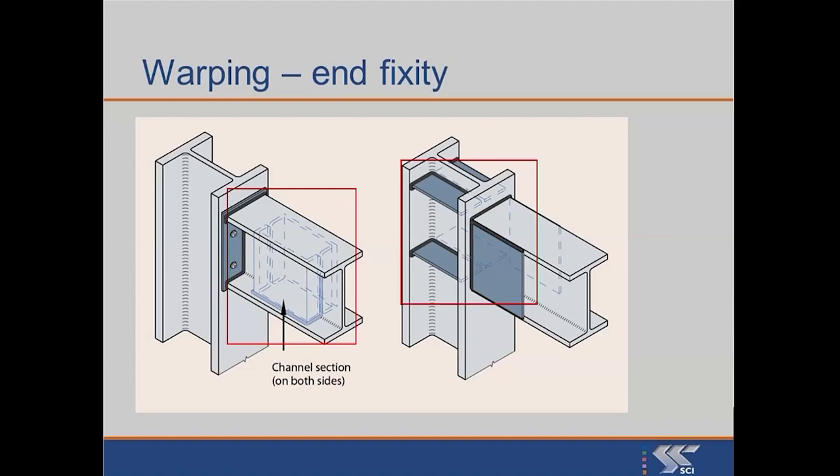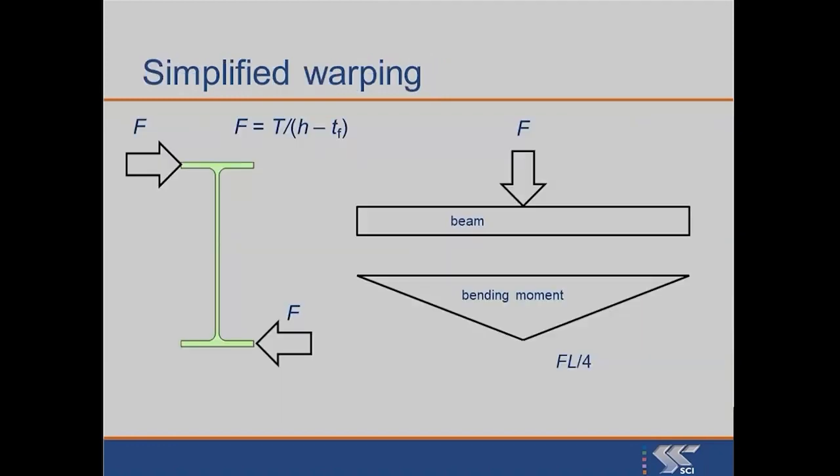These sorts of details, with on the left hand side the additional channel members welded in between the flanges, and on the right hand side the additional stiffness and the additional plate across the toes of the incoming beam, are very expensive and unlikely to be done. Most of the time I would recommend that you don't consider this sort of detailing but rather assume warping free when you verify the resistance of the member.